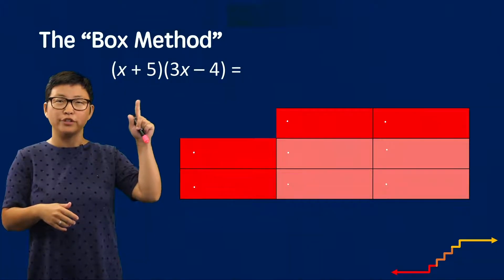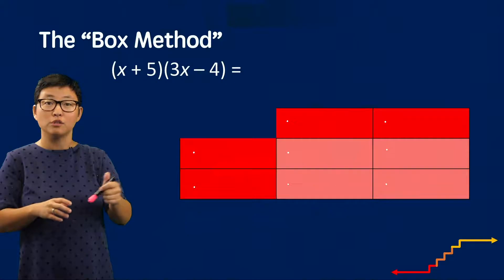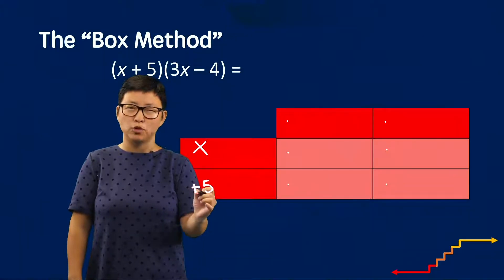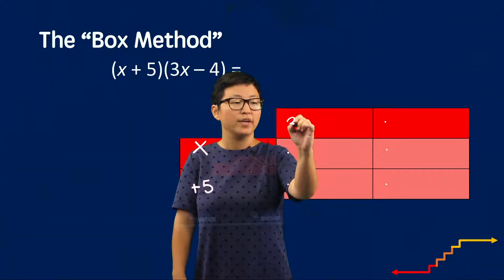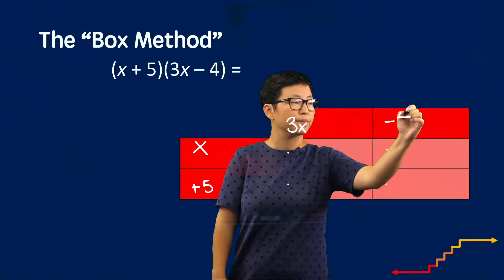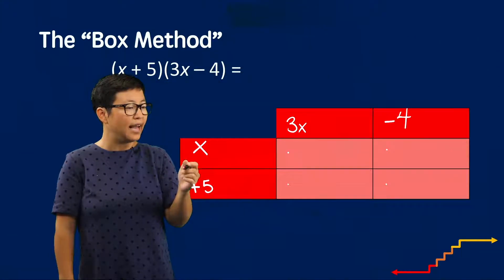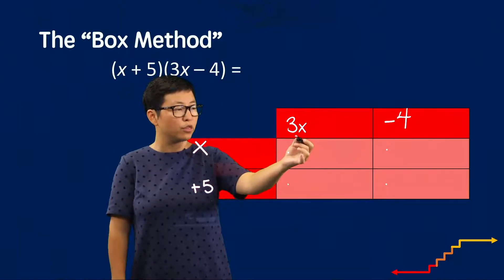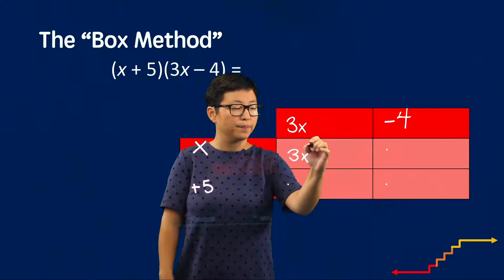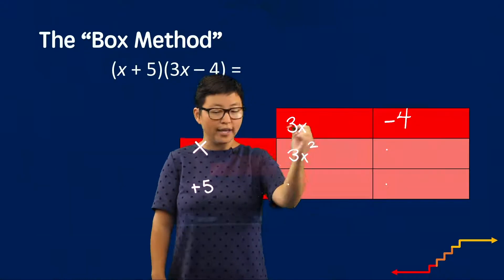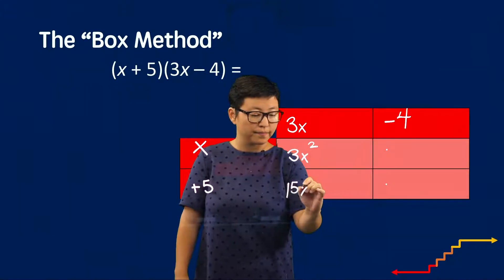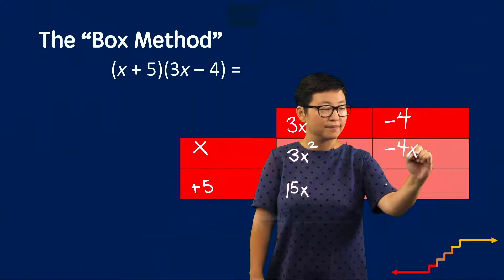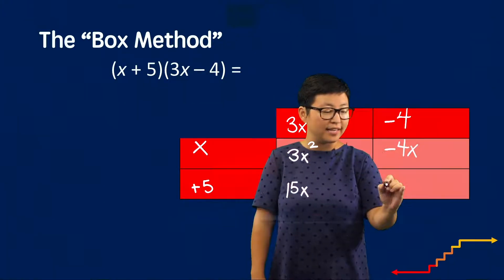First, you're going to look at each factor in your problem and put one term in each cell. So first we have x, and here we're going to write plus 5 — it's important to keep track of that sign. Up here we're going to write 3x and then minus 4. Now we'll use this method to multiply all of the factors by each other: 3x times x is 3x², 3x times 5 is 15x, negative 4 times x is negative 4x, and negative 4 times 5 is negative 20.